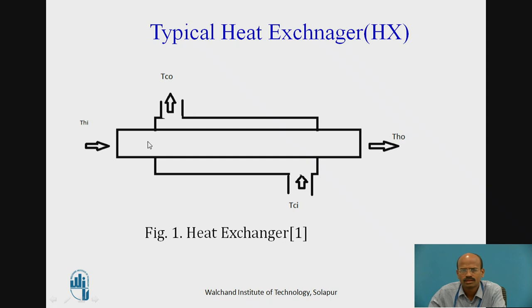The hot fluid generally flows through the inner tube. The hot fluid inlet temperature is THI and the hot fluid outlet temperature is THO. Through the annular space — the space between the inner tube's outer surface and the outer tube's inner surface — the cold fluid flows, with inlet temperature TCI and outlet temperature TCO.